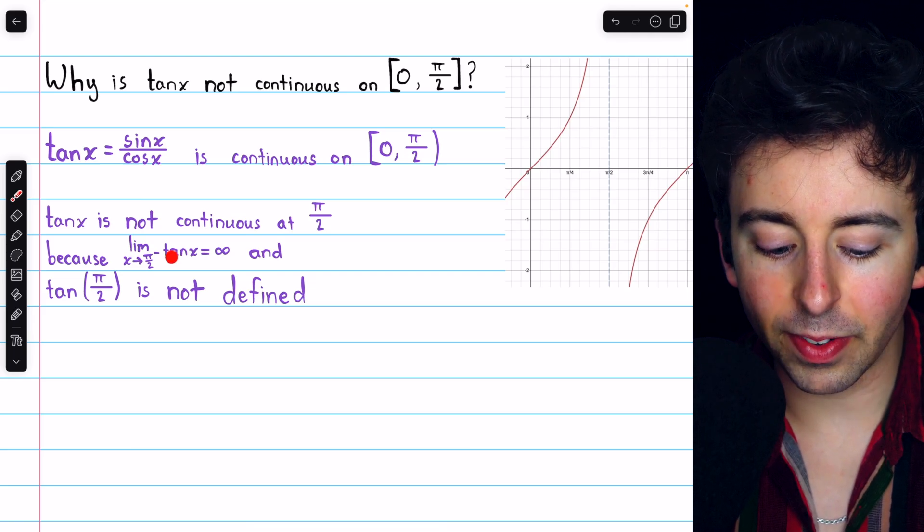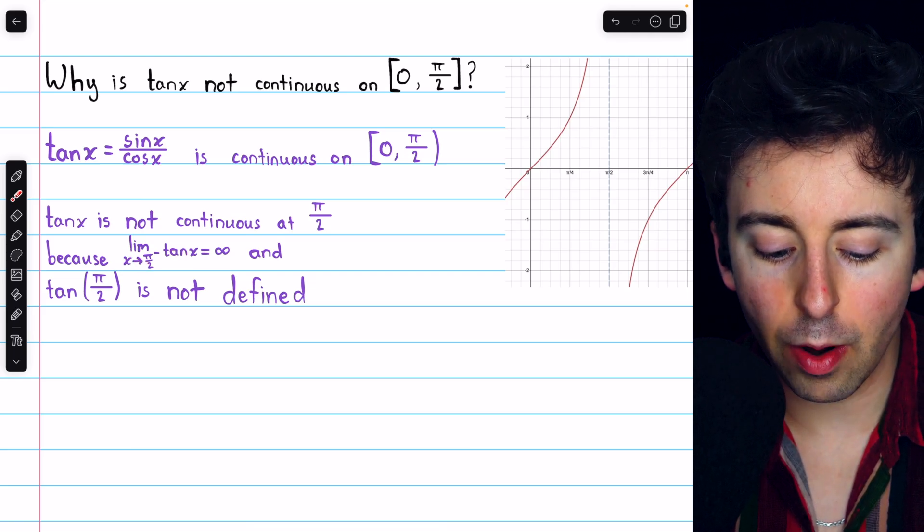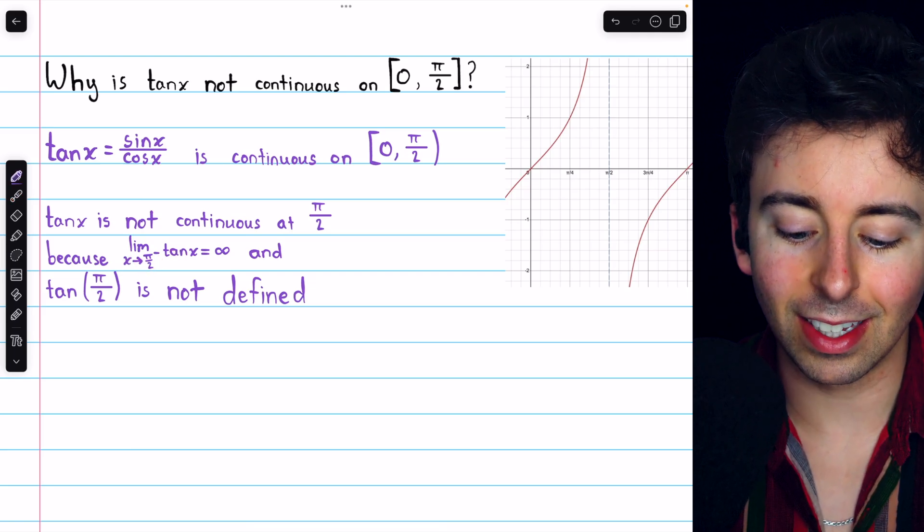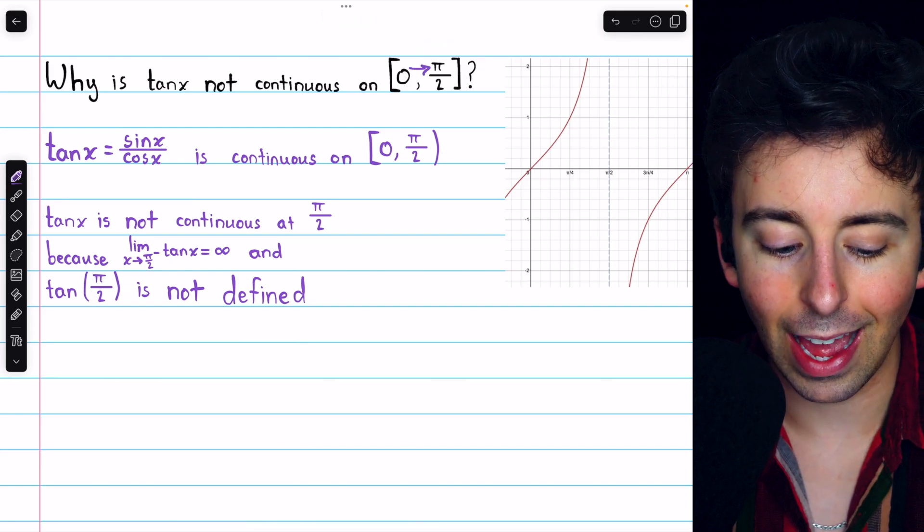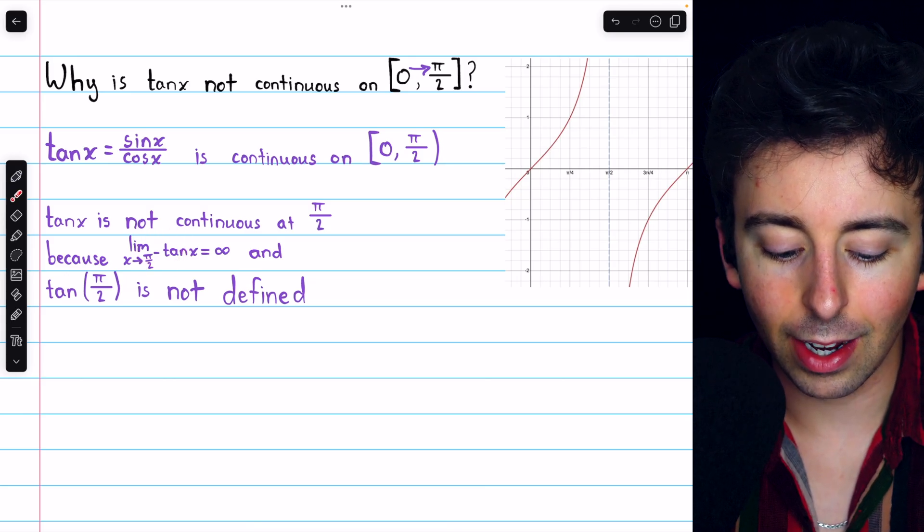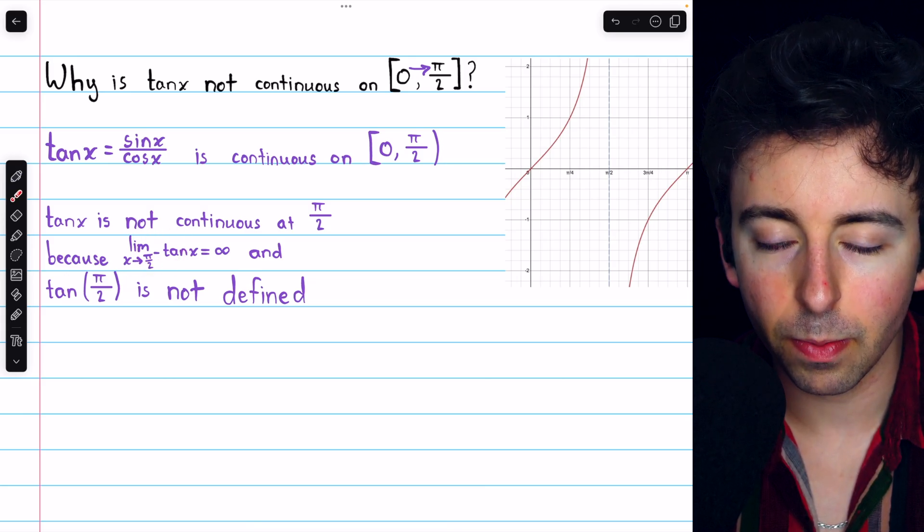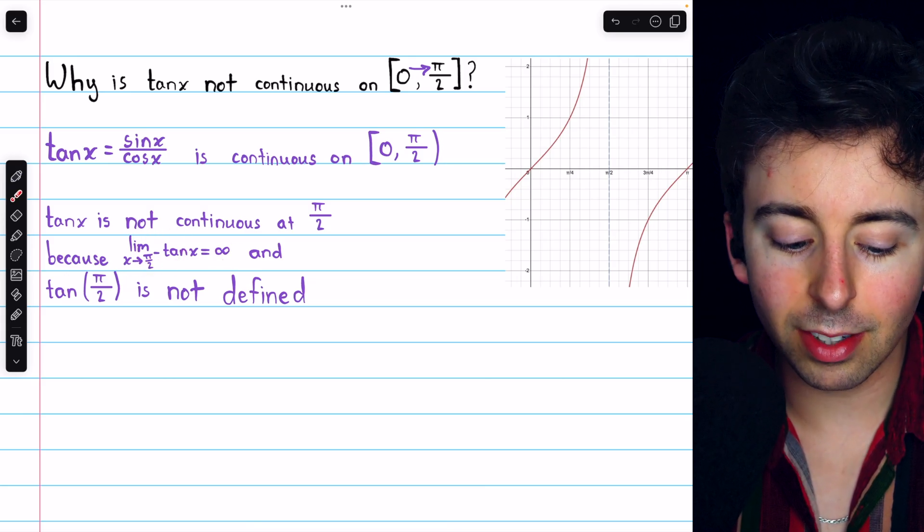For one, the limit of tan x as x approaches pi over 2 from the left, because again, it's the right endpoint. So on this interval, we can only approach it from the left. But the limit of tan x as we approach that point, pi over 2, from the left, is positive infinity.